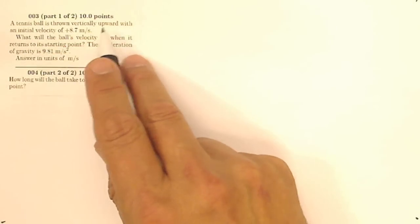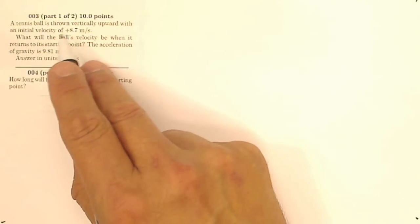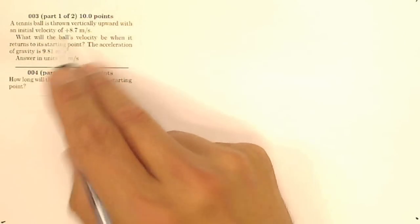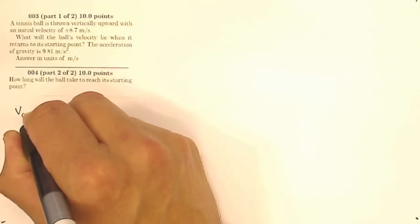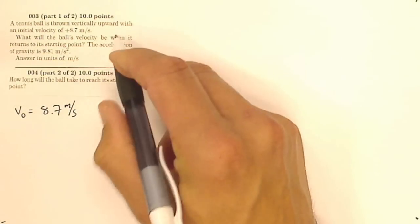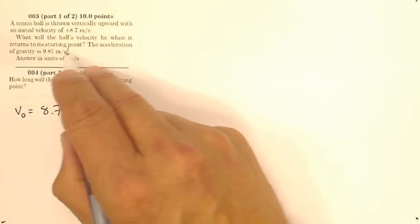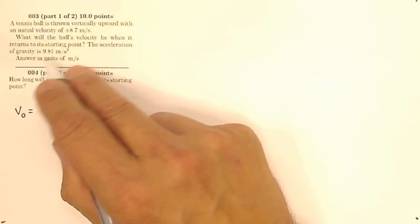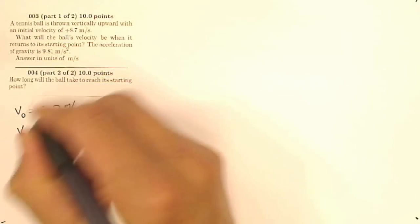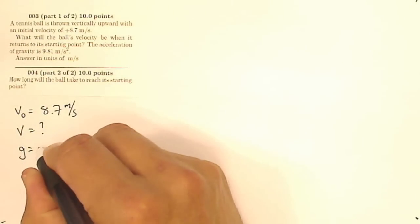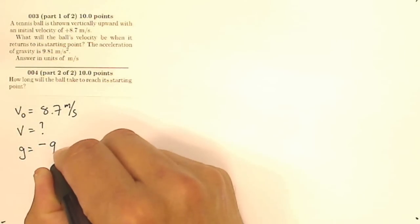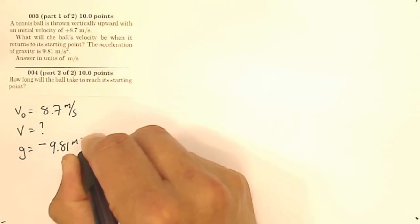It says, a tennis ball is thrown vertically upward with an initial velocity of positive 8.7 meters per second. That's good, because positive we consider up, so I'm going to say that my initial velocity equals 8.7 meters per second. What will the ball's velocity be when it returns to its starting point? The acceleration of gravity is 9.81 meters per second squared. So I'm looking for my final velocity, and I know that my acceleration of gravity is 9.81 meters per second squared, but I'm going to write that as negative, because I know it's down, 9.81 meters per second squared.